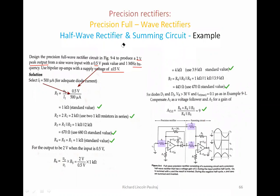Key design conditions to remember: make sure R1, R4, and R5 are equal — that is an important point. R2 should be two times R1 — that is also an important condition. Once these conditions are met, you apply the normal formulas to get the remaining values.